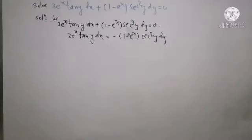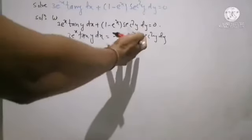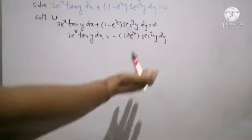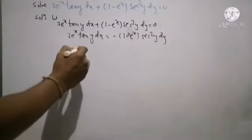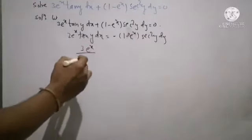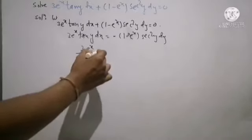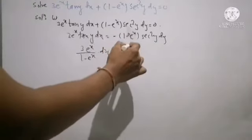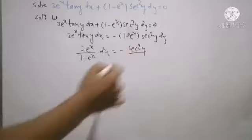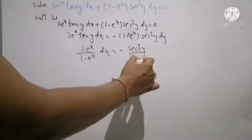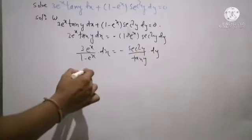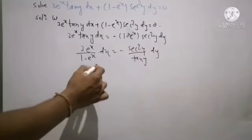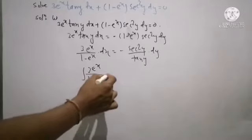Now the operator is separated and terms of x and y are in product, so we can easily transfer the term of x to the left hand side with dx, and the term of y to the right hand side. On the left hand side we get three times e raised to x as a denominator with one minus e raised to x and operator dx. On the right hand side, minus sign is there, and six-squared y at the numerator and tan y in the denominator.